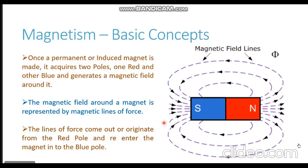This is a very important property of the magnet: once it acquires two poles, the red and the blue, the magnetic lines of force will always come out of the red pole and re-enter through the blue pole. You may have heard the poles referred to as north pole and south pole, but that terminology is not always correct — it can be confusing once we discuss earth's magnetism. We will refer to the poles simply as red pole and blue pole, remembering that lines of force come out from the red and re-enter at the blue.